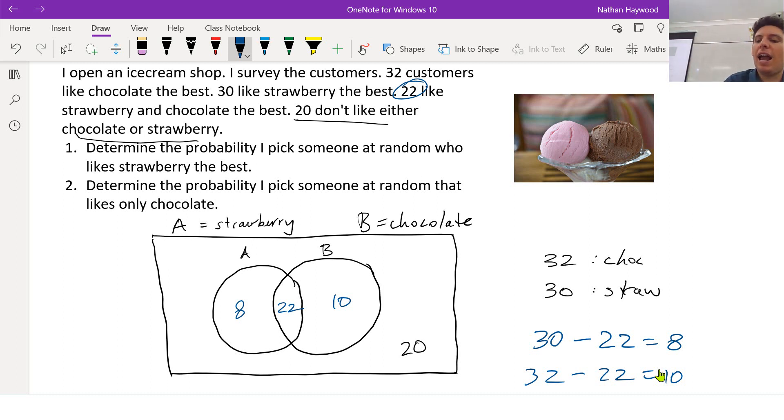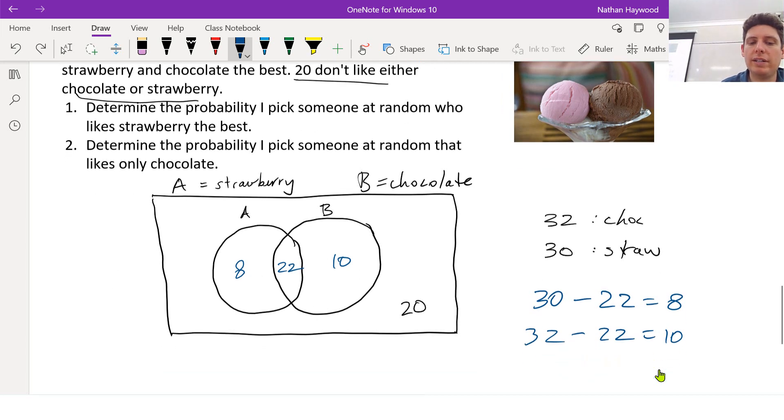Now, how do we figure out how many people I surveyed altogether? Does anyone know? Add them all together. Very good. So we add them all together. 8 plus 22 plus 10 plus 20 gives us 60 people. So now we have all the information we need.